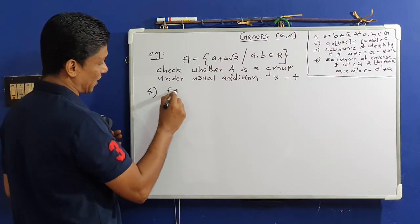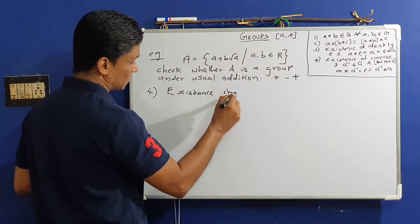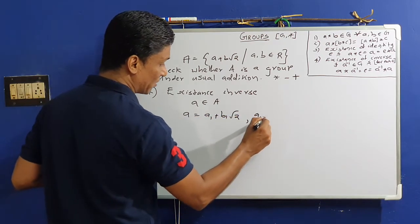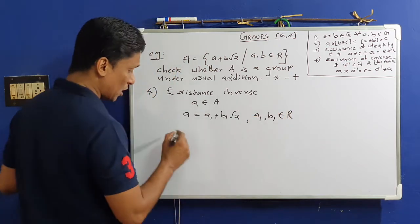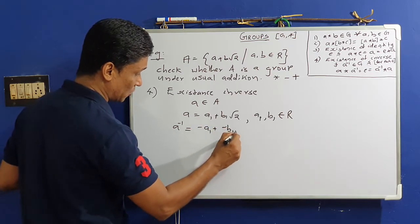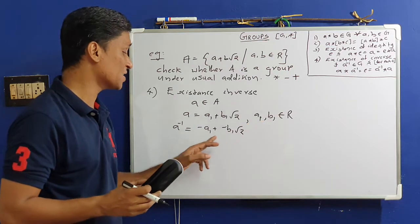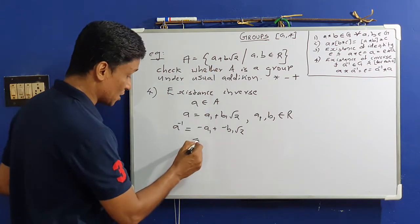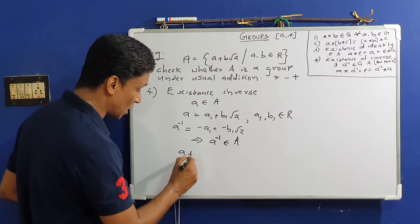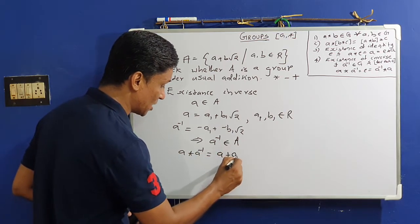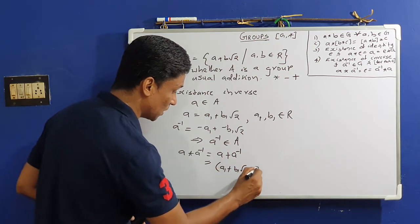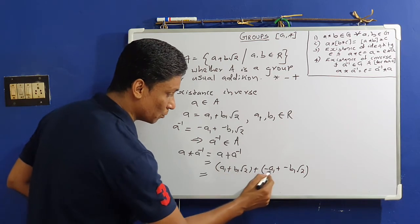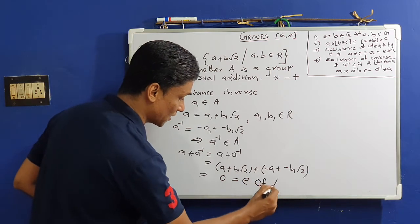Last condition: existence of inverse. Suppose A ∈ capital A, so A = a1 + b1√2 where a1, b1 ∈ ℝ. Take A-inverse = (−a1) + (−b1)√2. Since −a1 and −b1 are real numbers, A-inverse ∈ A. Then A★A-inverse = (a1 + b1√2) + (−a1 − b1√2) = 0, which is the identity E of A. So every element of A has its inverse in A.